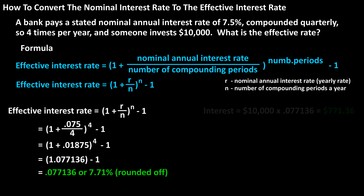So using this 7.71%, if we multiply the $10,000 times it, we get $771.36. This is the amount of interest someone would make in one year.